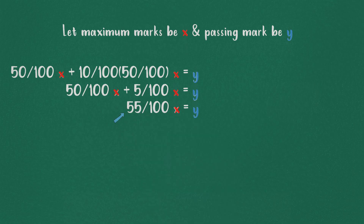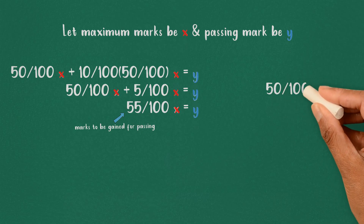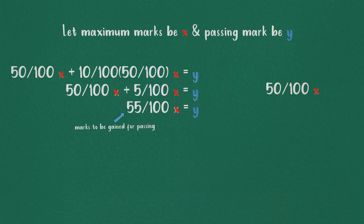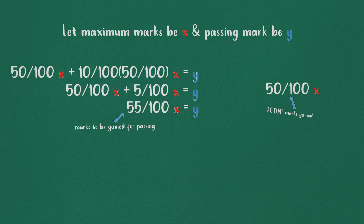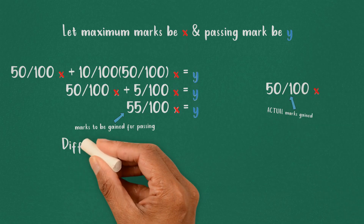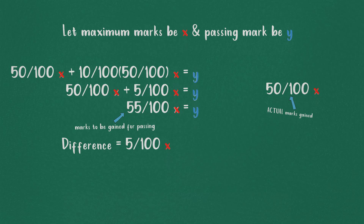Now it is known that for passing, he needed 55% of the maximum, but he only obtained 50%. The difference in these is 5%, which is known to be 15 marks, since he failed by that many marks.